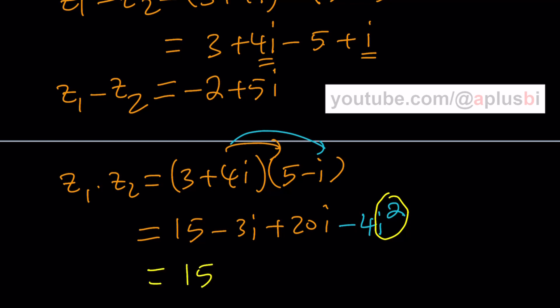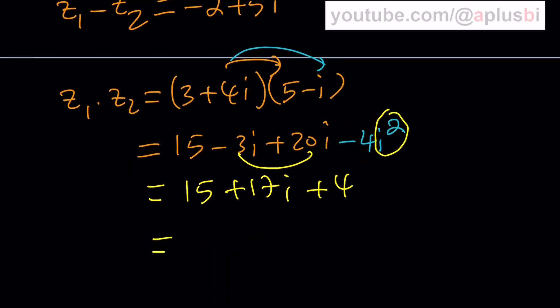15 and these two gives me 17i and then plus 4. And finally, I get 19 plus 17i as the product.